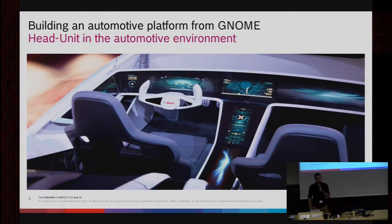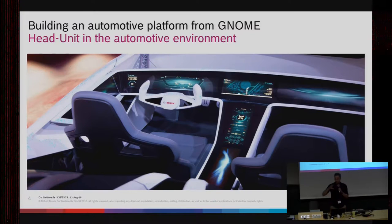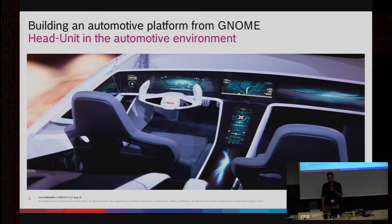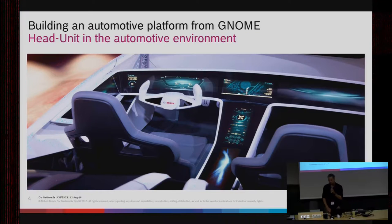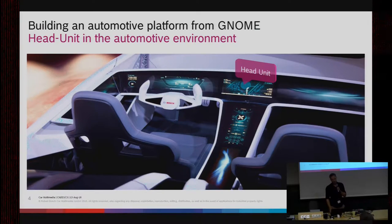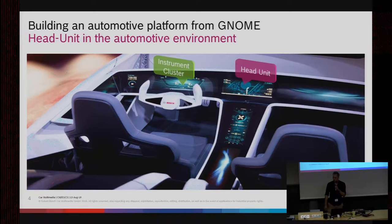I work for car multimedia, which is mostly working on head units. A head unit is more or less the display you see in the front of a car. In nowadays cars it's a 7 to 9 inch screen, either usable by touch or by rotary buttons and knobs on the side. Here's an example — a quite futuristic car shown at CES in Las Vegas this year. This car has not only a head unit but also an instrument cluster with a completely controlled VR display.